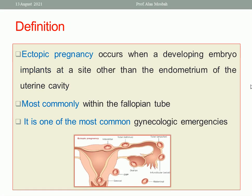Let us start with the definition. We can define ectopic pregnancy as a pregnancy which occurs when a developing embryo implants at a site other than the endometrium of the uterine cavity. Implantation usually occurs in the upper part of the uterus — posterior wall, anterior wall, and fundus. Any implantation of a fertilized ovum outside the normal endometrium in the uterine cavity is called ectopic pregnancy.